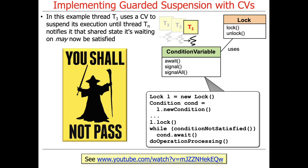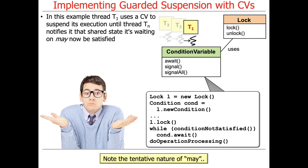I love Lord of the Rings, so I always think of Gandalf at the bridge at Khazad-dûm saying 'You shall not pass' — basically, you can't continue until the condition is satisfied. The key thing here is the tentative nature of 'may.' You may be notified that a condition was available, but due to the inherent non-determinism of concurrency, you may not get that resource when you're finally awakened. It's a really subtle issue, but it explains how we program condition variables and condition objects.